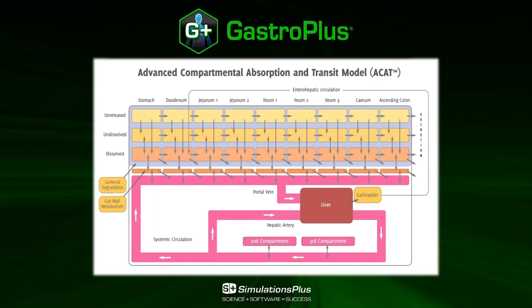This model divides the gastrointestinal tract into nine compartments, starting with the stomach, the duodenum, all the way to the cecum and ascending colon. Each compartment is defined by its own physiological properties, such as the length, the radius, the pH, etc.